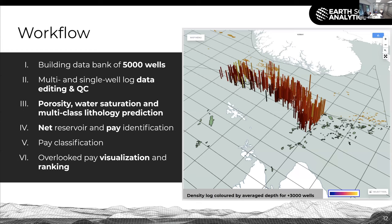The workflow has six steps. Initially we build a data bank — in this case of 5,000 wells — and we have a structured database. We then go through a series of data editing and QC-ing. This is very important. The adage of rubbish in, rubbish out is very apparent in the machine learning industry. We then do the machine learning — the prediction of our attributes, in this case porosity, water saturation and lithology.